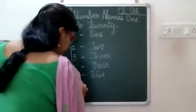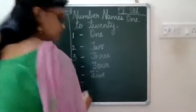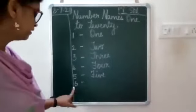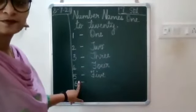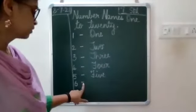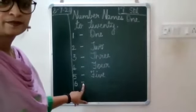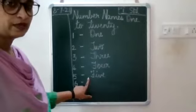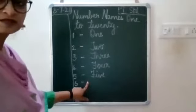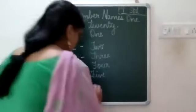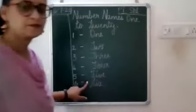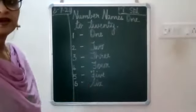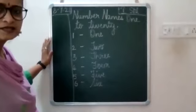Now again leave a line, write SIX. Then leave one finger space, put a small dash, then again leave one finger space, and write capital S-I-X, six.